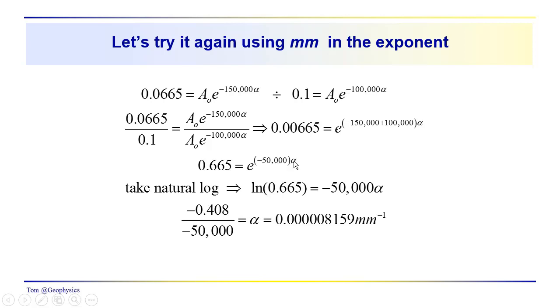But alpha is going to be different, isn't it? Because we've got 50,000 here when we take the natural log, we've got the natural log of 0.665 again. But over here we have minus 50,000 times alpha, and we're dividing this minus 0.408 by 50,000. So you can see we've moved the decimal place three places to the right. And we have an extra three zeros. So we have an alpha of 0.00008159. And this is in inverse millimeters rather than meters. So the only difference is the decimal place here. We had 0.008159 for meters. Now we have 0.0000008159 inverse millimeters.